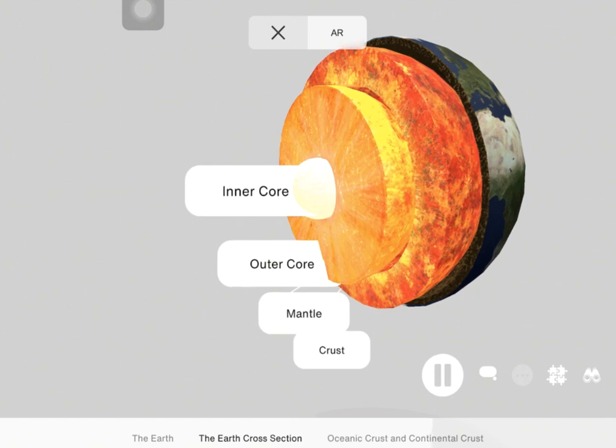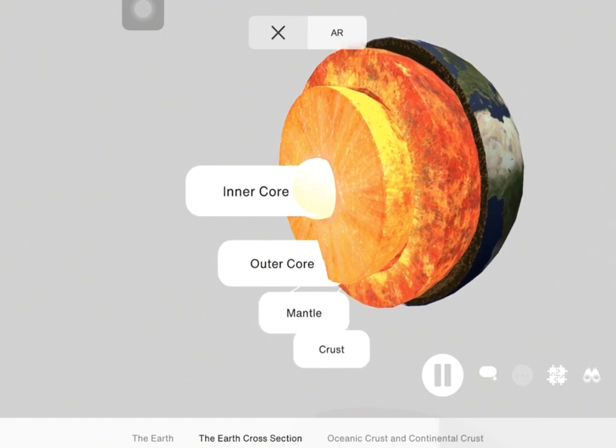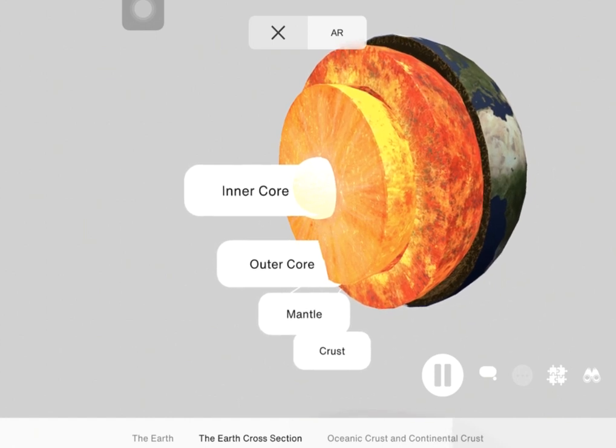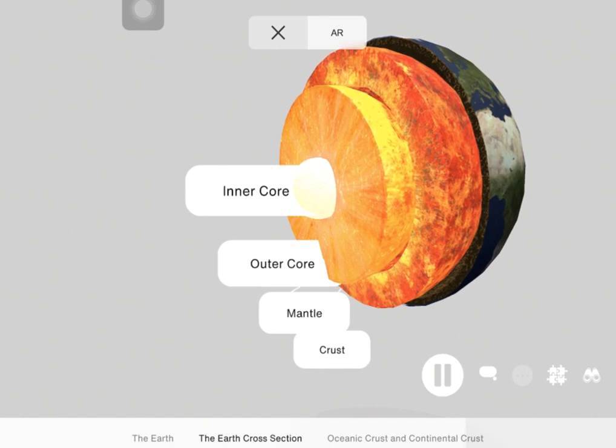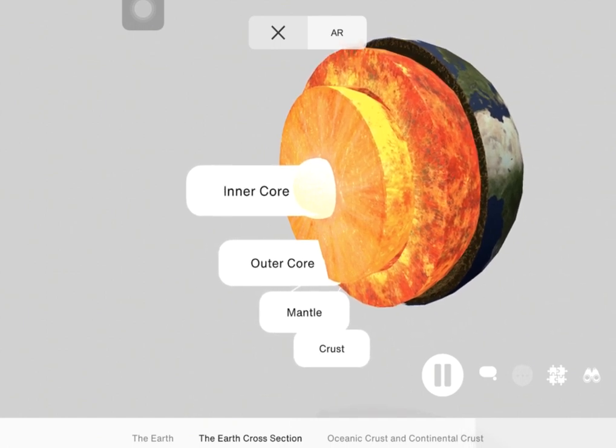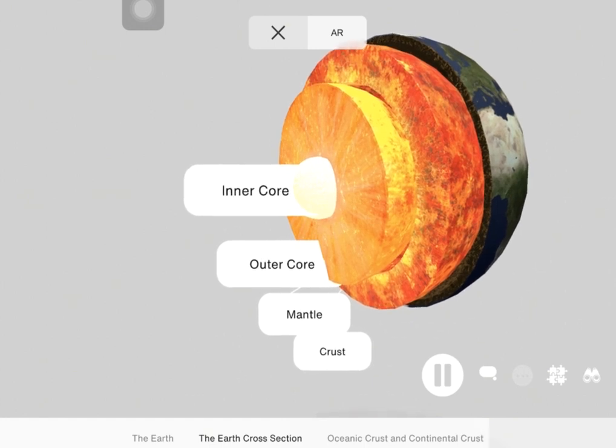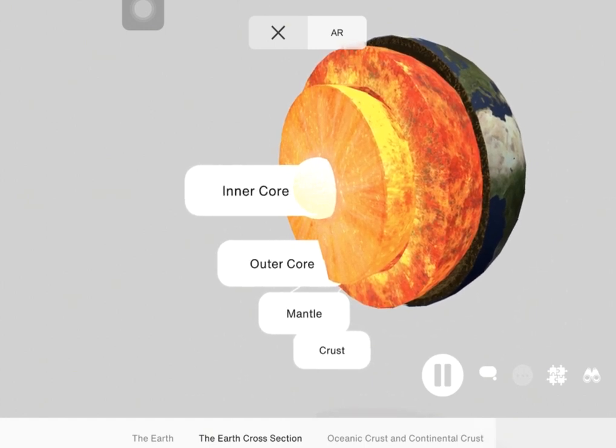The outer core of the Earth is a fluid layer about 2300 kilometers or 1400 miles thick and composed of mostly iron and nickel that lies above the Earth's solid inner core and below its mantle. Its outer boundary lies 2890 kilometers or 1800 miles beneath the Earth's surface.